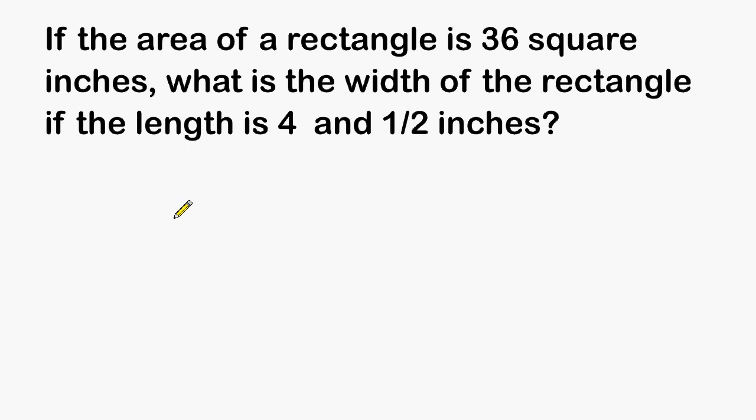So imagine we have a rectangle and one side is 4 and 1/2 inches and the other side is an unknown length, but it is given that the area has a coverage of 36 square inches. We have to figure out what the unknown width is of this rectangle.